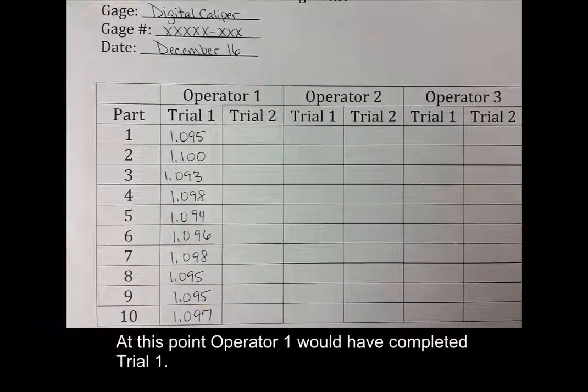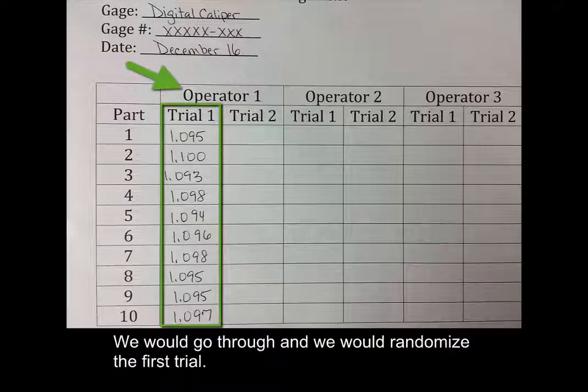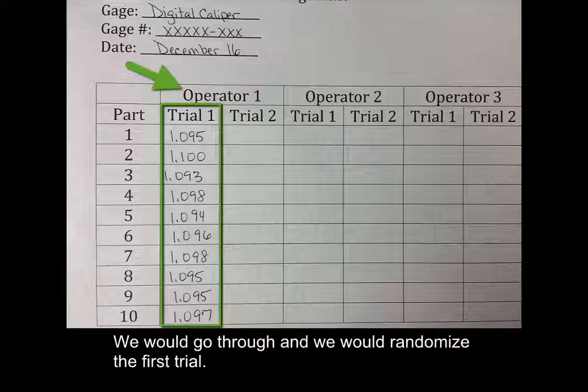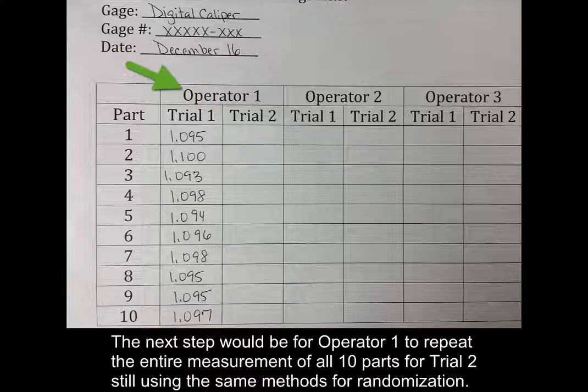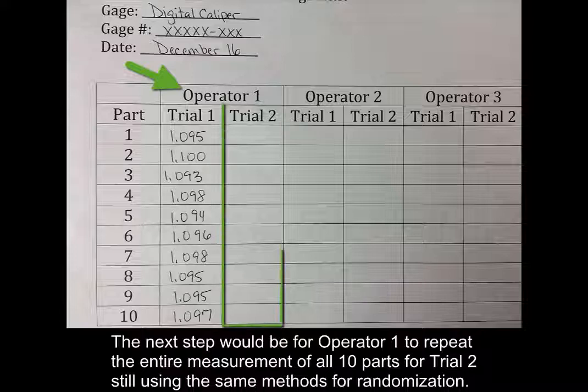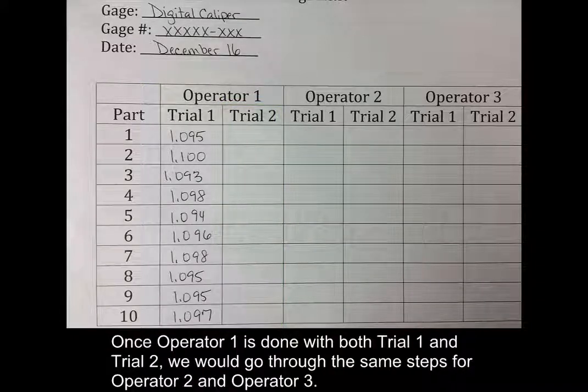At this point, operator 1 would have completed trial 1. We would go through and randomize the first trial. The next step would be for operator 1 to repeat the entire measurement of all 10 parts for trial 2, still using the same methods for randomization. And then once operator 1 is done with both trial 1 and trial 2, we would go through the same steps for operator 2 and operator 3.